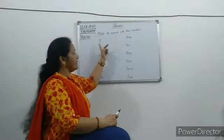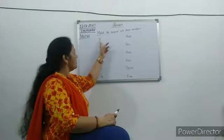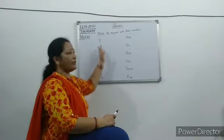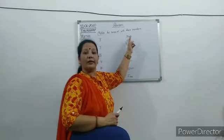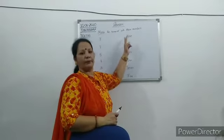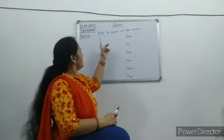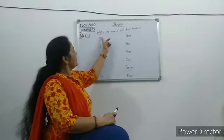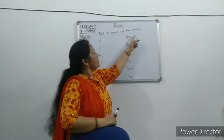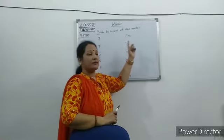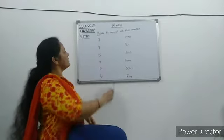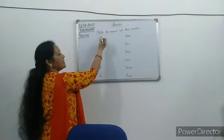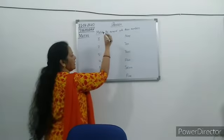Numeral — numeral like this: 3, 5, 4, 7, 8. And numbers are the names. Okay? So what do we need to do? We need to match numerals with their number names.